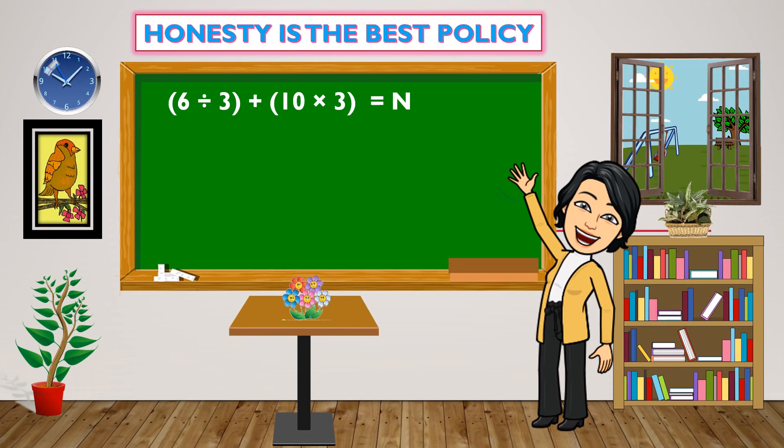Next: open parentheses 6 divided by 3, close parentheses, plus open parentheses 10 times 3, close parentheses equals N. First to perform is division. So, 6 divided by 3 equals 2. Then, 10 times 3 equals 30. So, 2 plus 30 equals 32.